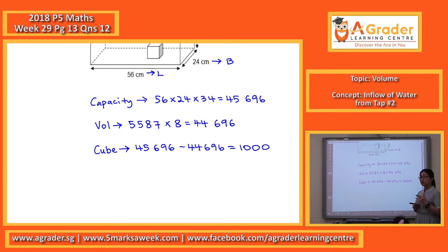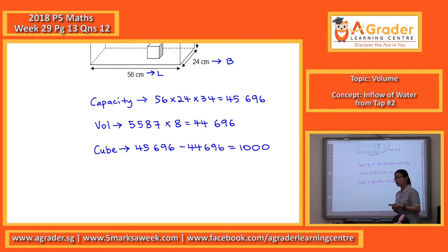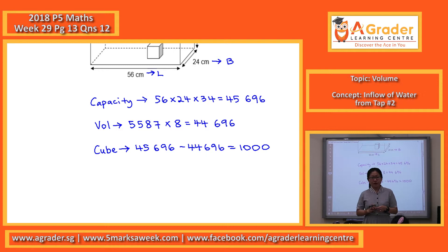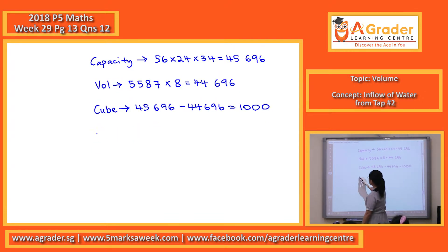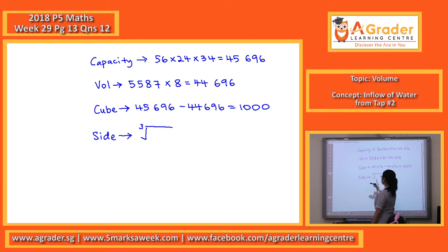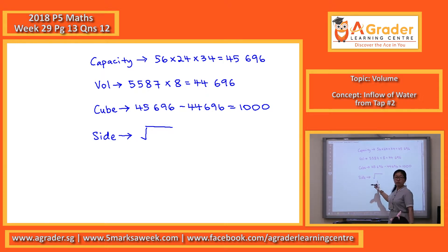On your calculator, there's a thing called cube root. Most probably you have to press Shift and then press the square root button. Different calculators have different buttons. When you press Shift and the square root button, you get the cube root symbol — this is the cube root, and this is the square root. Can you find this button on your calculator? If you press Shift and the same button, you will see that it becomes the cube root sign.